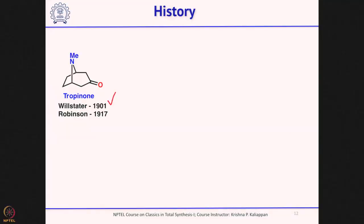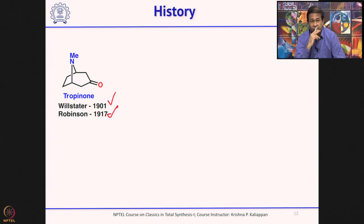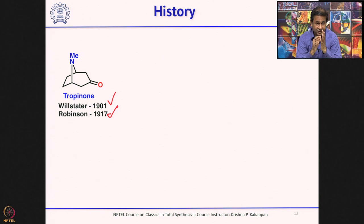Tropinone is an alkaloid. In 1901, Willstätter reported its synthesis, and 16 years later Sir Robert Robinson reported the synthesis of tropinone. Interestingly, Robinson's synthesis involved two important concepts: green chemistry, because all the reactions were done in water, and a multicomponent reaction to make the natural product. These two important concepts — green chemistry and multicomponent reaction — were introduced almost 100 years ago in the synthesis of tropinone.